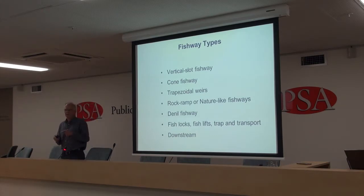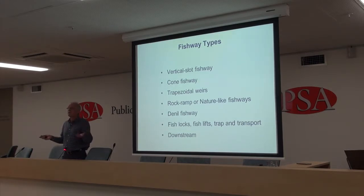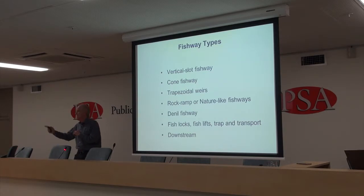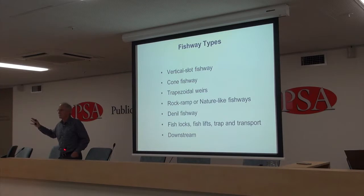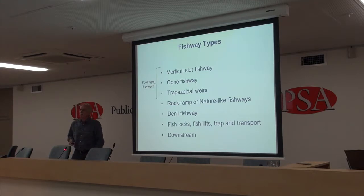Let's look at a broad range of fishway types — not all of them, but the major ones you'll see in Australia. Vertical slot fishway, cone fishway, trapezoidal weirs, rock ramp — in Europe they're called nature-like fishways — Deneal fishway, and high-level fishways: fish locks, fish lifts, and fish transport. I'll also add a fish pump. At the bottom I've listed downstream passage — we tend to focus on upstream, but as John outlined, it's a cycle of migration, both upstream and downstream.